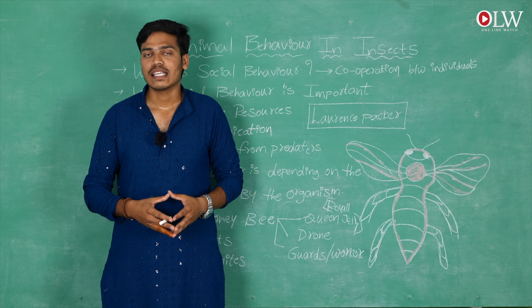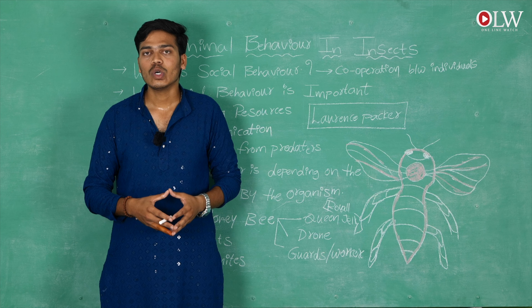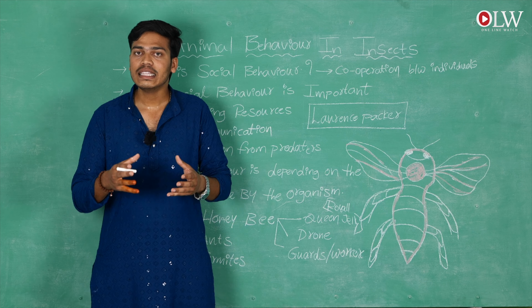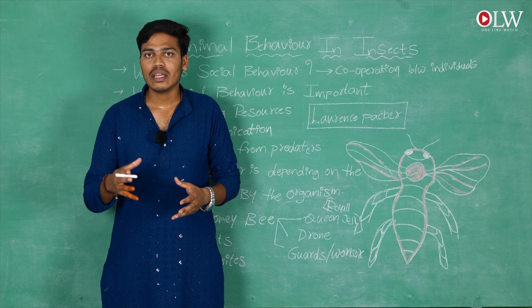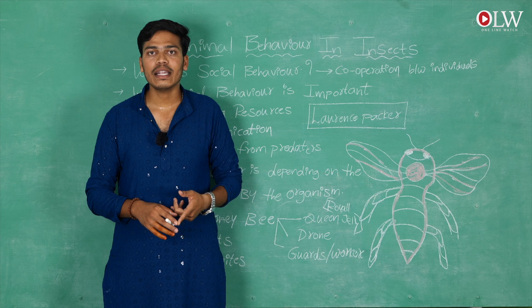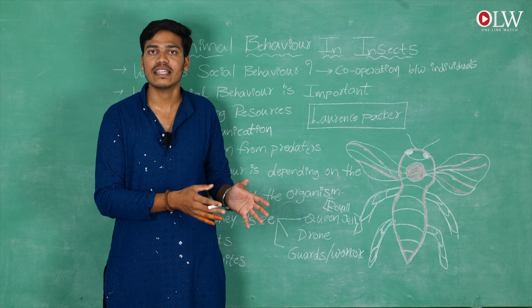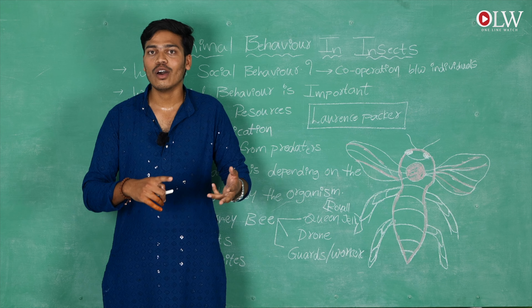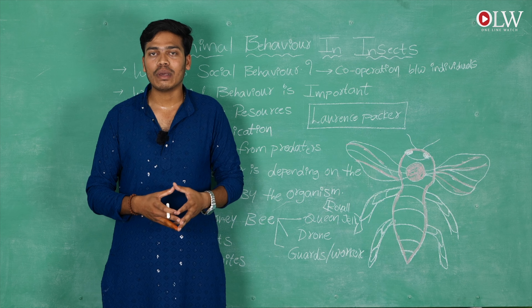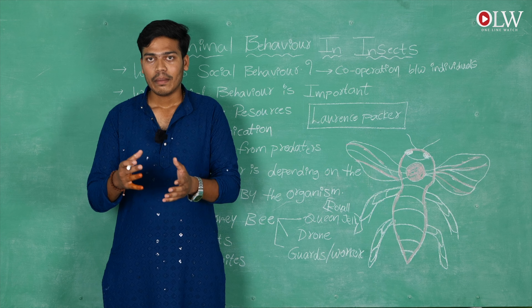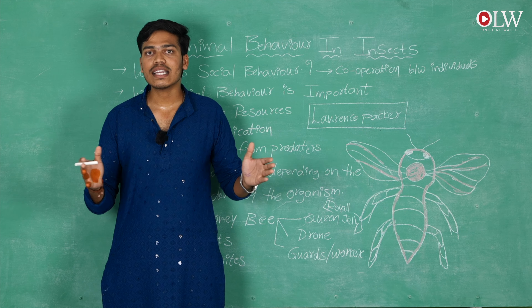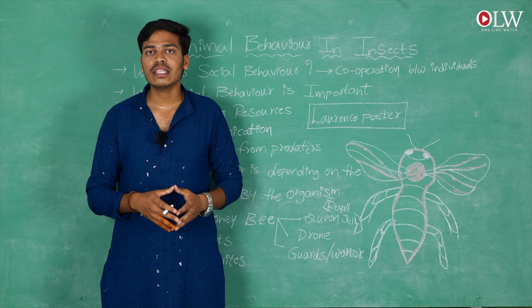The next topic is social behavior in termites. Termites are also insects that show social behavior. They live in burrows and lead colonial lives. They are also subdivided into three main types: queen termite, drone, and worker termites. Like other queens, the queen termite has a large, well-developed abdomen because it produces eggs and participates in the mating process, producing a large amount of eggs. It is the only one controlling the entire colony.